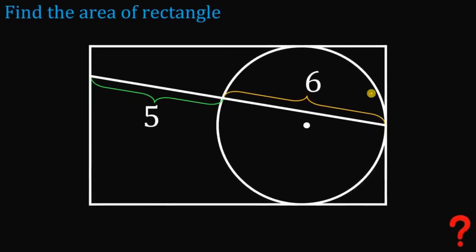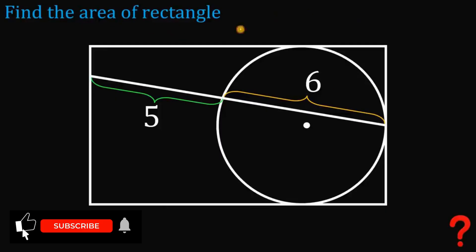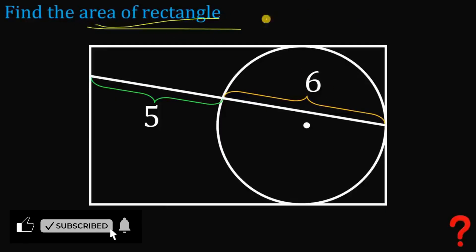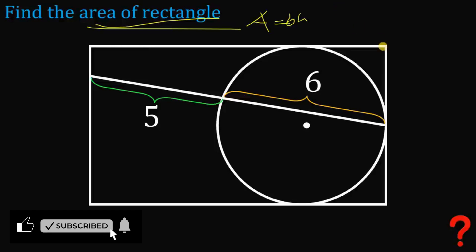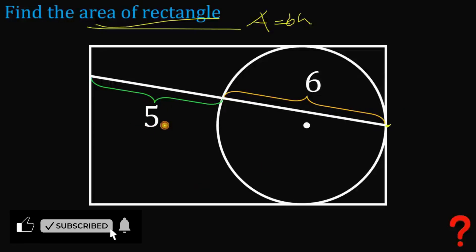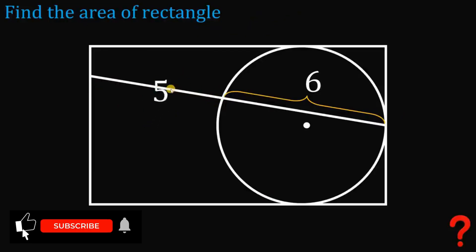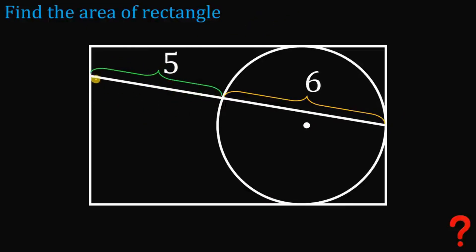Given this information, our goal is to find the area of this rectangle. To find the area, we need the base multiplied by its height. What we're going to do is to put this 5 on the top, so this segment from this point to this point must be equal to 5 plus 6, or simply equal to 11 units.